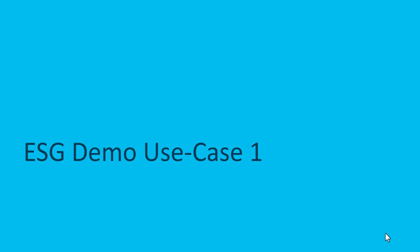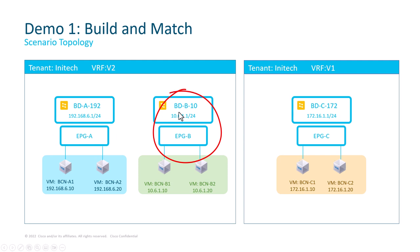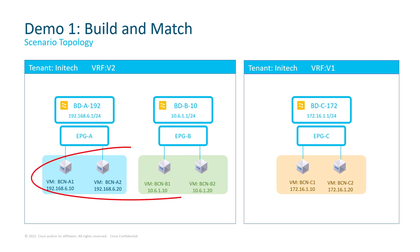In this section, I'm going to guide you through how to build endpoint security groups and how to assign endpoints to them using the most common classification methods. Let me introduce you to the scenario topology. In my ACI fabric, I'm hosting tenant Initec, which has two VRFs, V1 and V2. Let me start with the second VRF, where two bridge domains reside: BDA with its subnet referenced by EPGA, and BDB with its subnet referenced by EPGB. I use VMM integration and I have two virtual machines assigned to EPGA and also to EPGB.